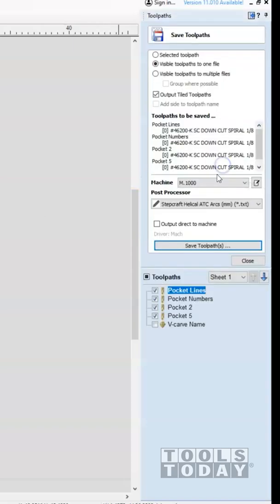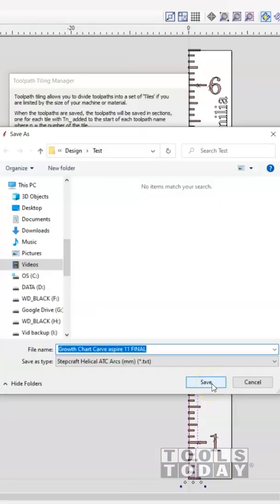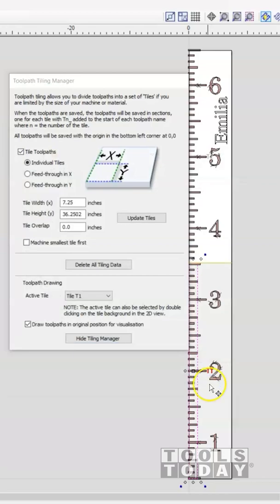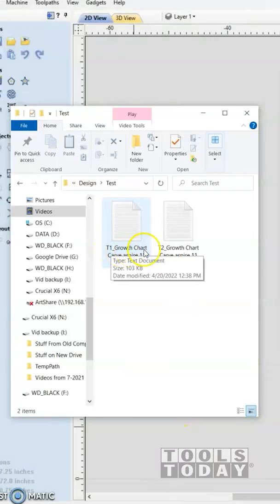So then we can go back and save our toolpaths. Once we save those toolpaths, we'll actually create two separate files, one for tile one and one for tile two.